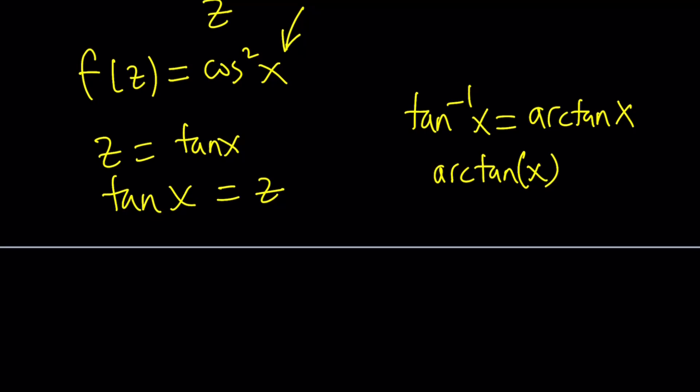So tangent x equals z, if we tan inverse both sides, let's tan inverse this, and let's tan inverse z. And then we should be able to move it so we can tan inverse of z.